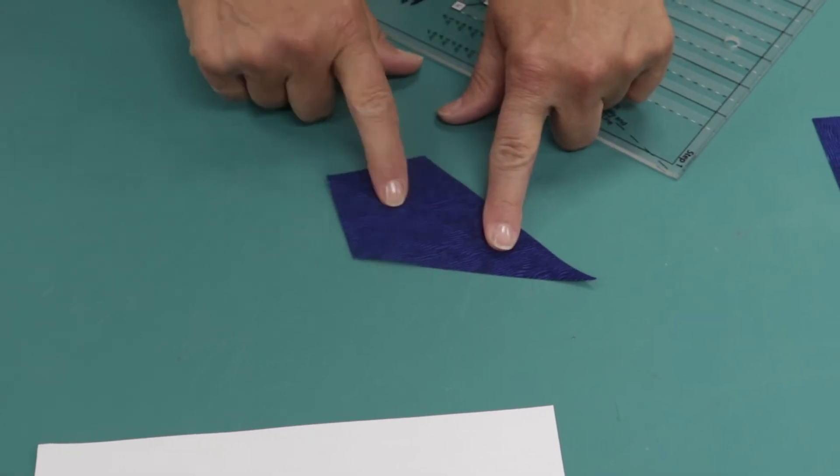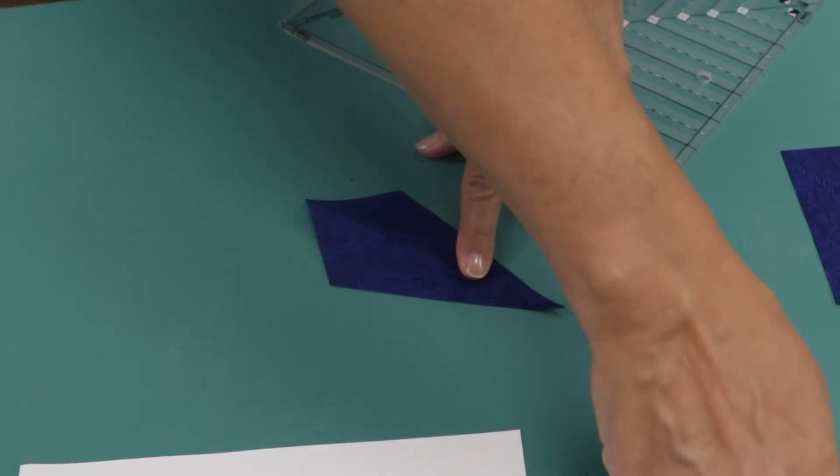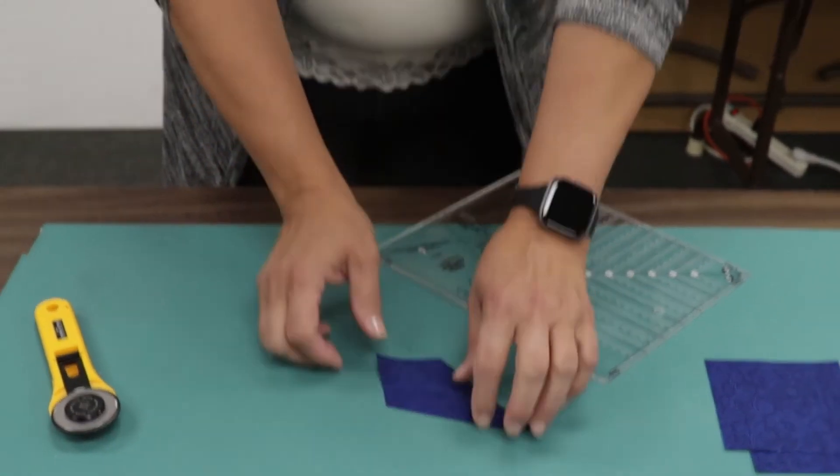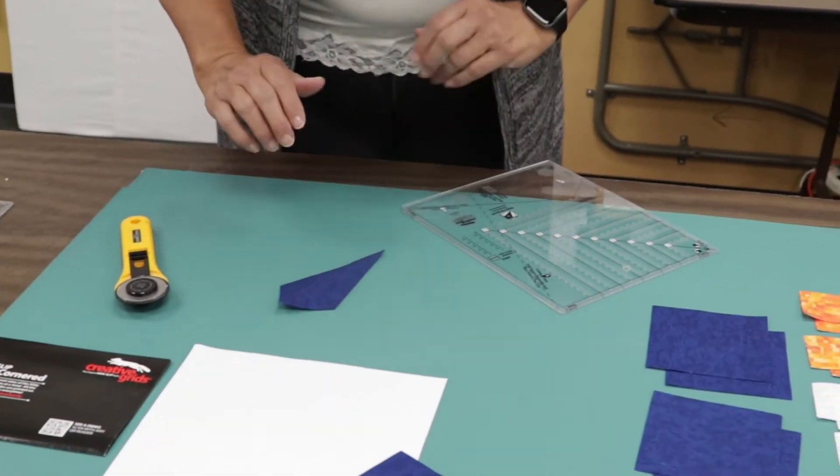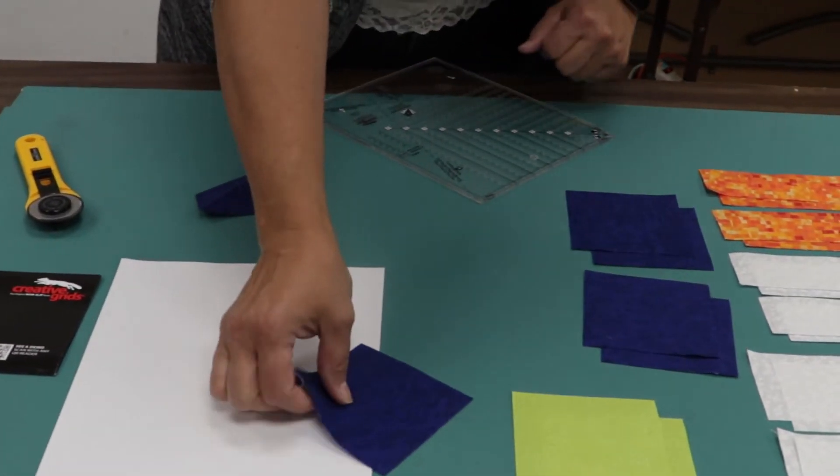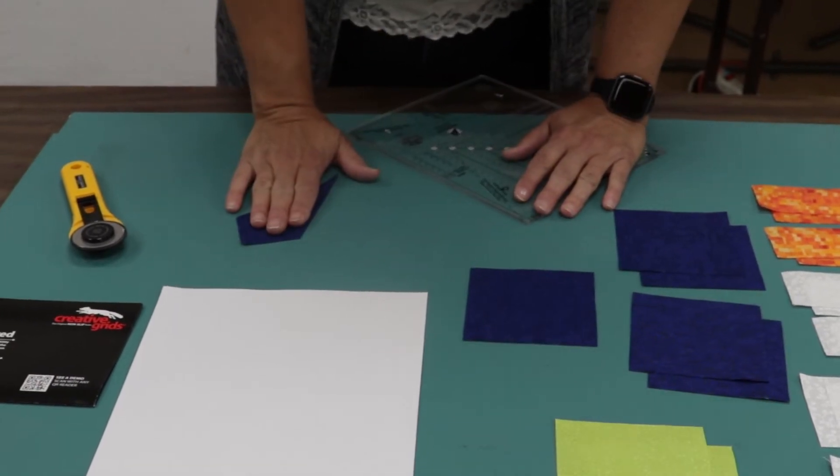And that's all you need to do for the A units. So here's my A. So we're going to need six blues and two green. But I'm just going to work with one for now. So six blues, two greens, all done with the A's.